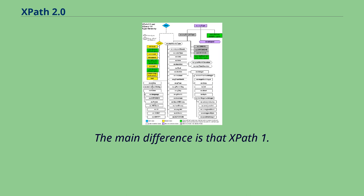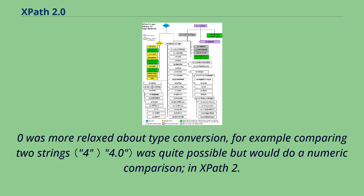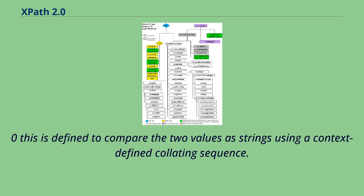The main difference is that XPath 1.0 was more relaxed about type conversion. For example, comparing two strings "4" and "4.0" was quite possible but would do a numeric comparison. In XPath 2.0, this is defined to compare the two values as strings using a context-defined collating sequence.